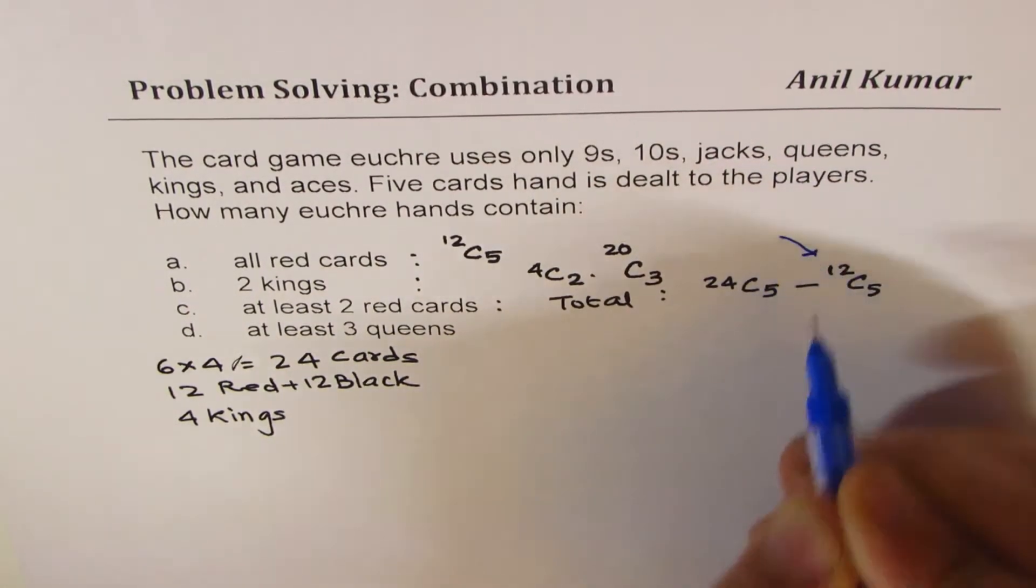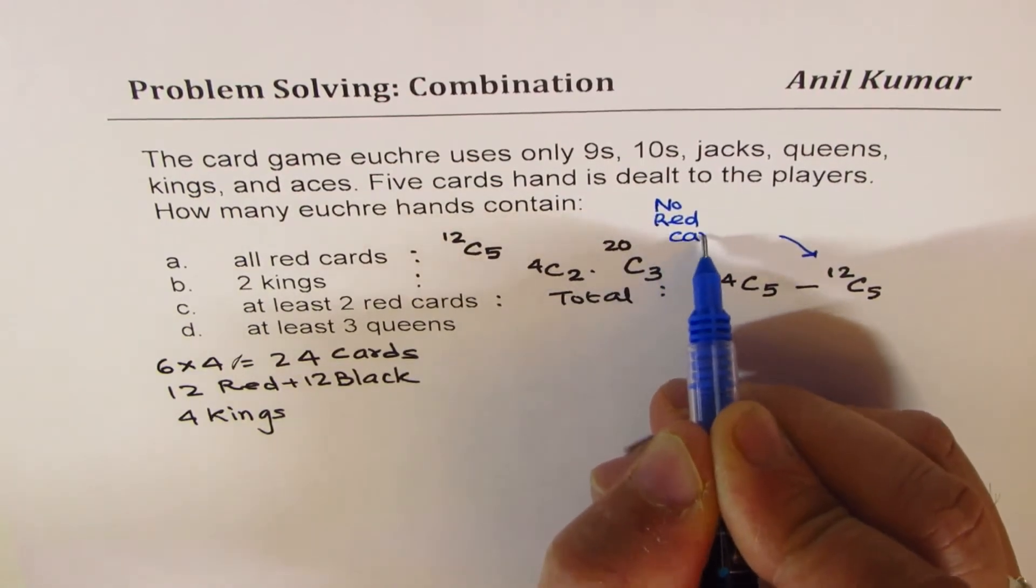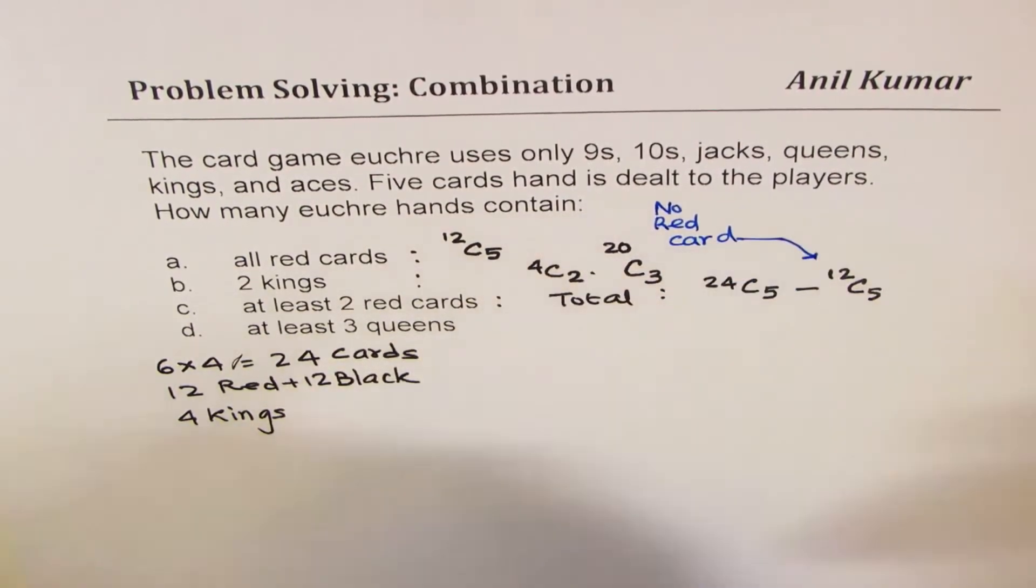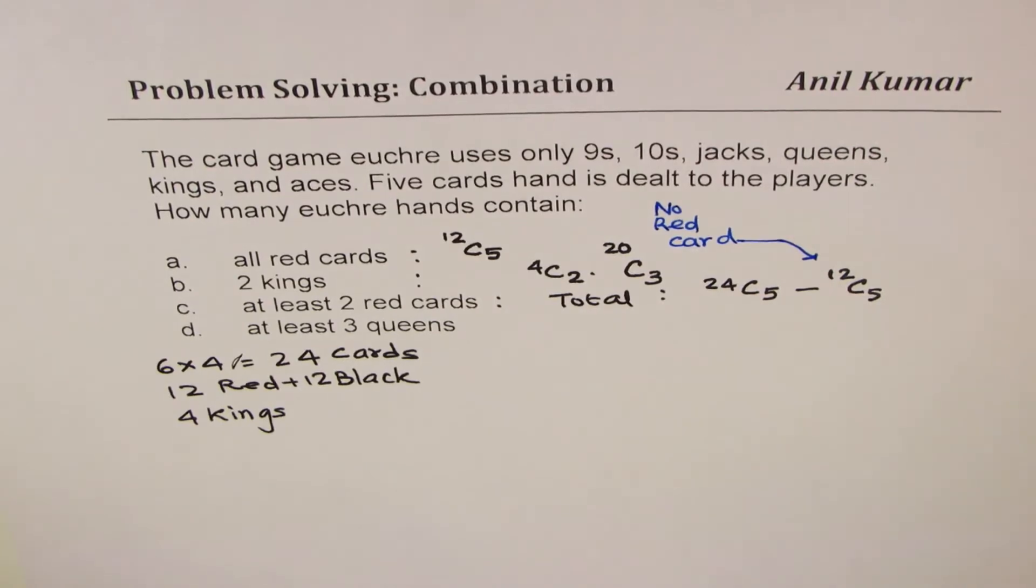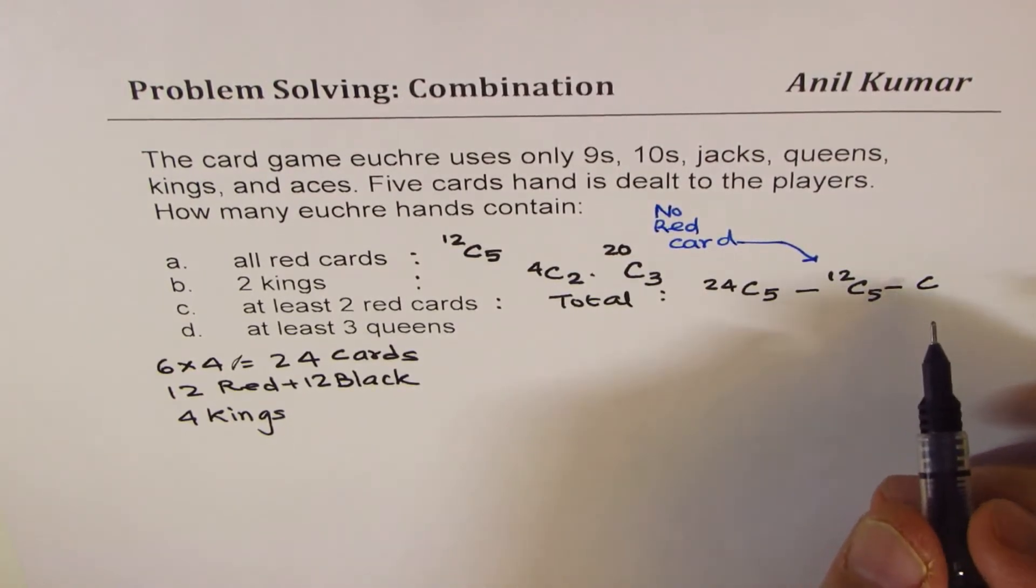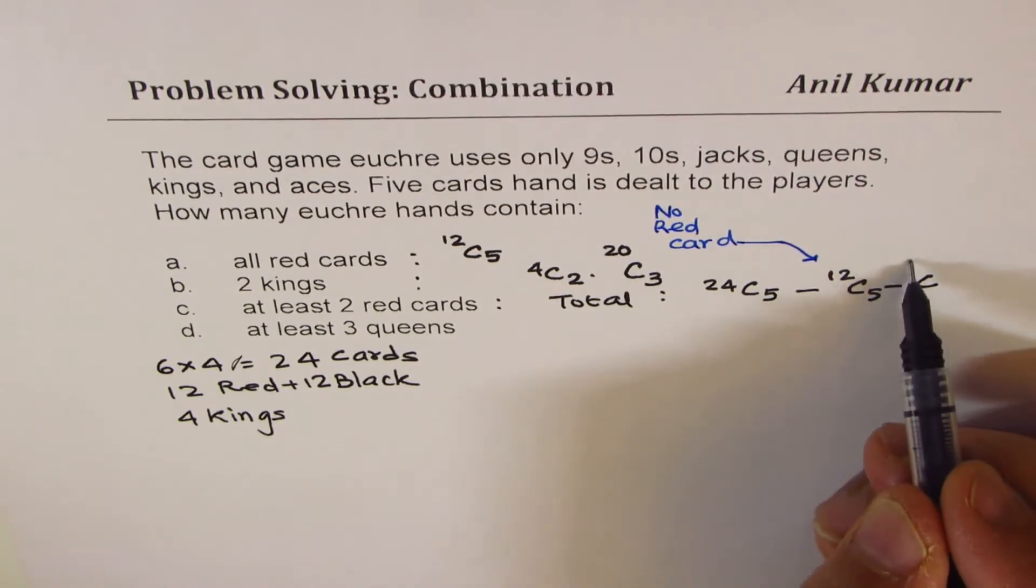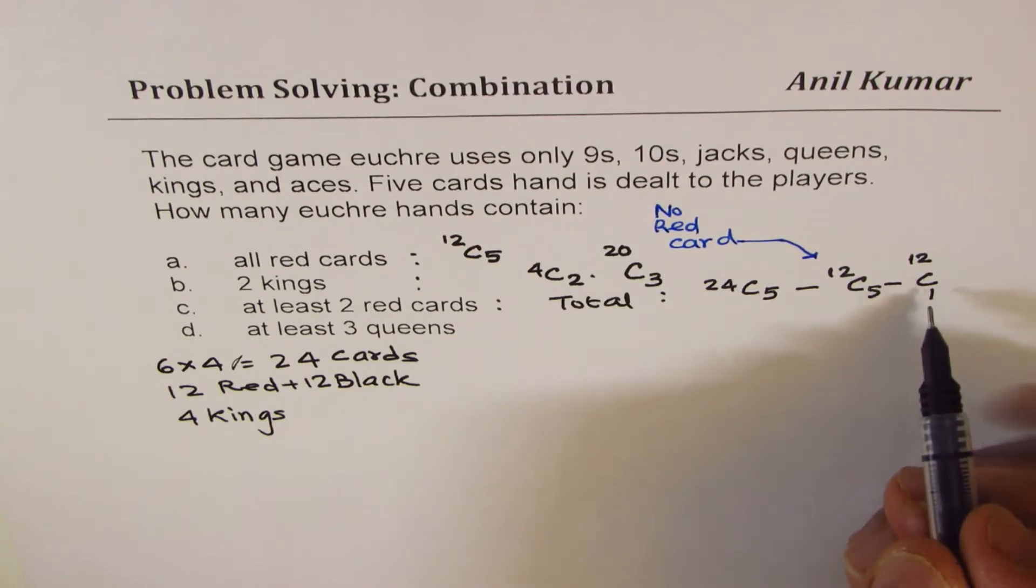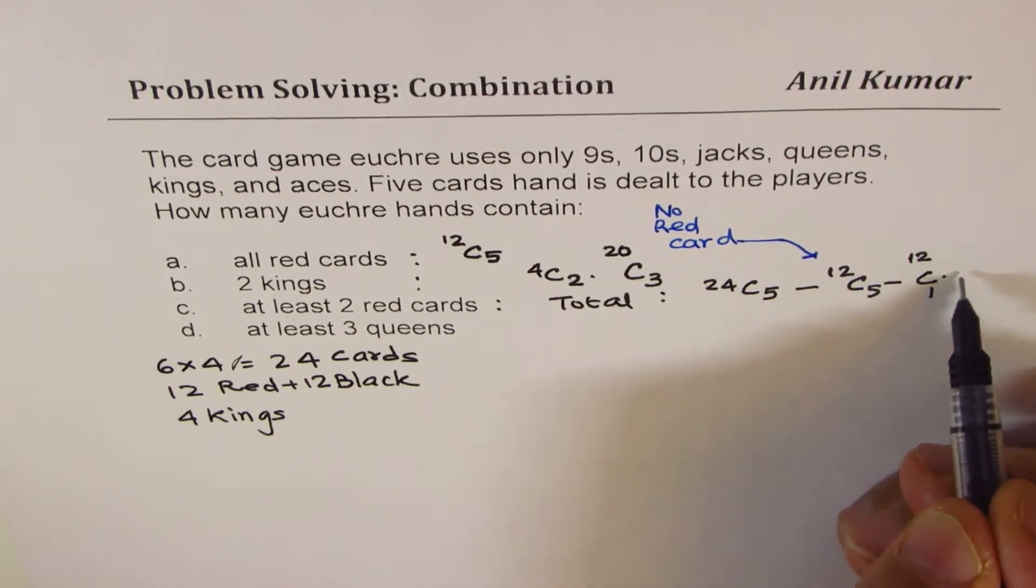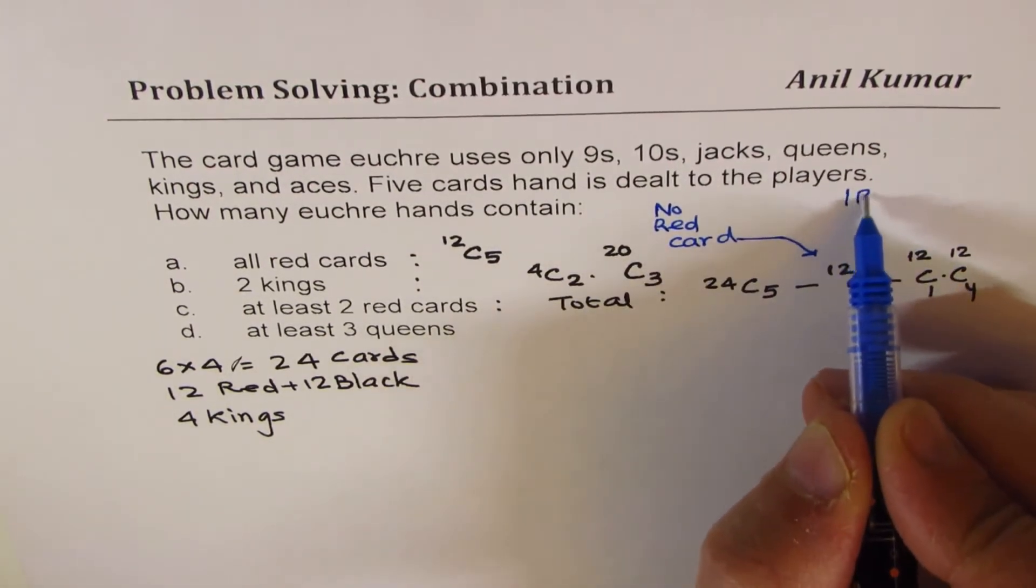This means no red card. Does it make sense? So this means no red card. And then all five we have selected. And then we can also take away the combination that we have one red card. So that means one red card is selected from 12 and all others are black. So times from other 12, we select four. Does it make sense?